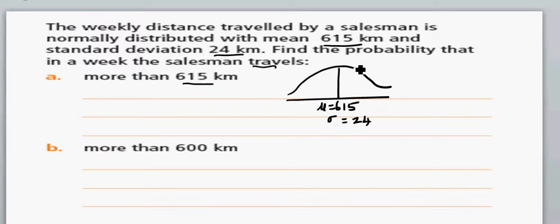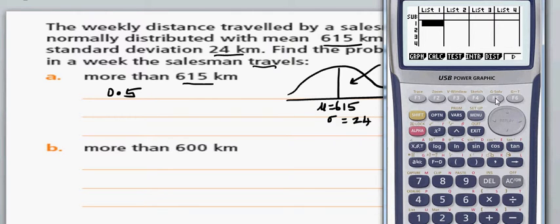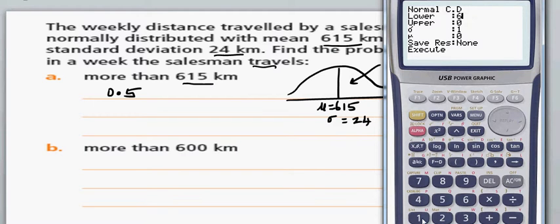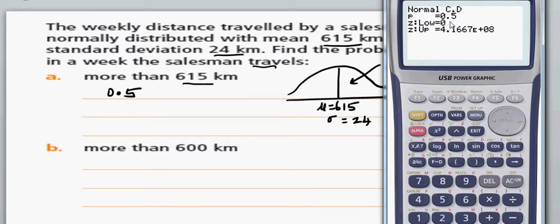The first question is: find the probability that in a week the salesman travels more than 615 kilometers. Just looking at this, you can say this is going to be 50 percent, or in terms of probability it is 0.5. If you want to verify on a calculator, go to normal distribution, press F5 for distribution, go to normal, then NCD. Set lower to 615 and upper to a large number like 99999, standard deviation 24, mu 615 — that gives exactly 0.5. So here you don't even need a calculator.